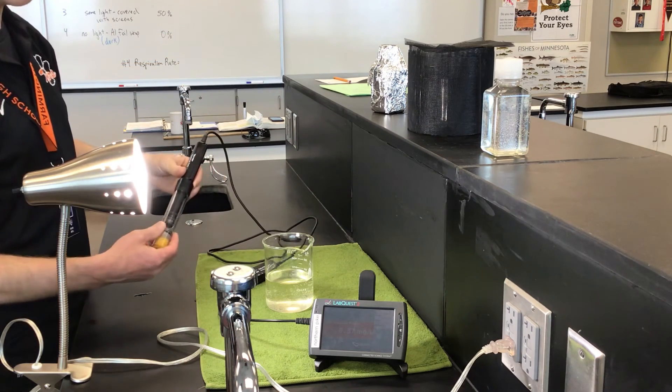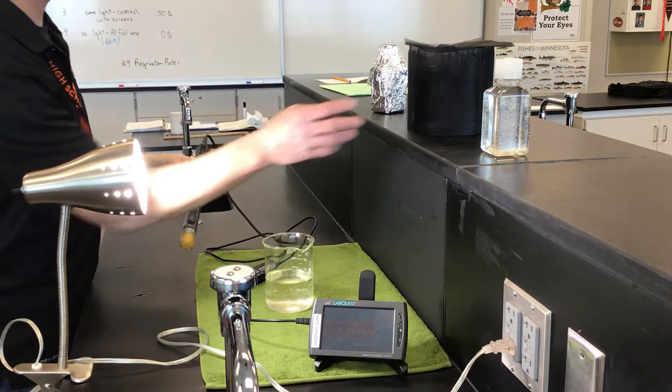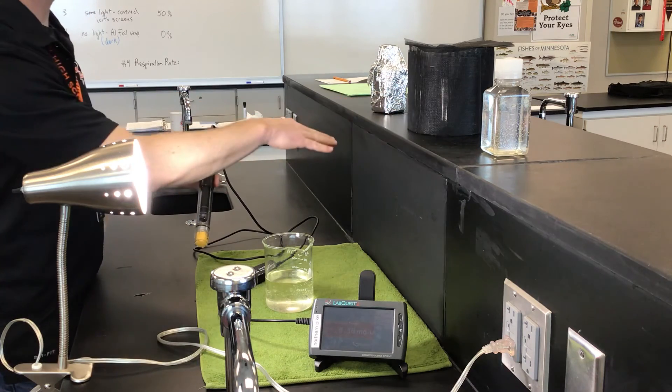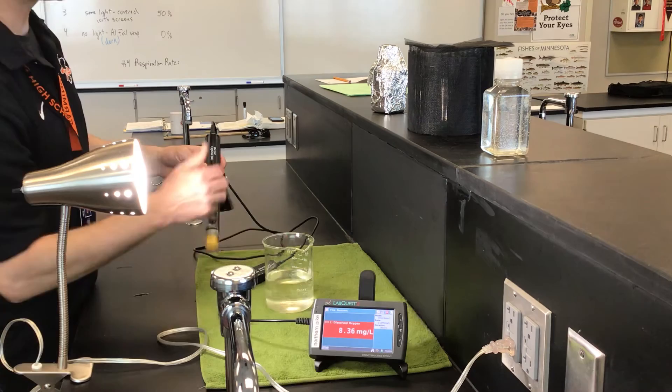readings on those. I'm not going to show that—I've already got readings from another class period that I'll use. But again, I just put the dissolved oxygen sensor in each of these, waited a minute or so until the number stabilized, and then I would write that number down.